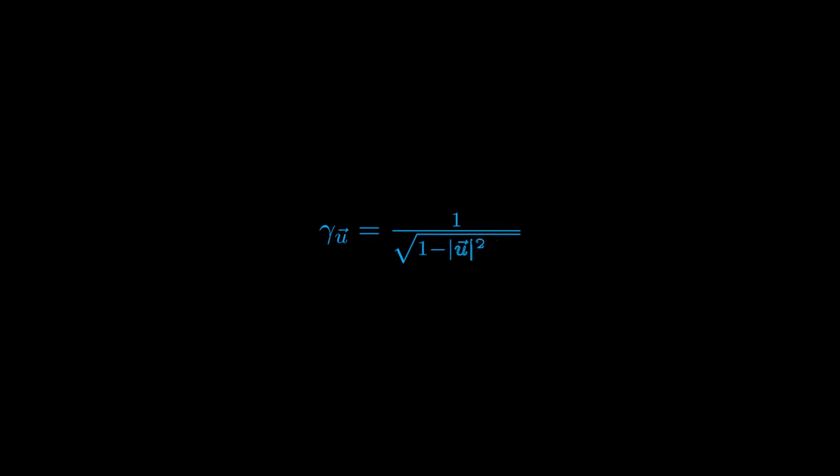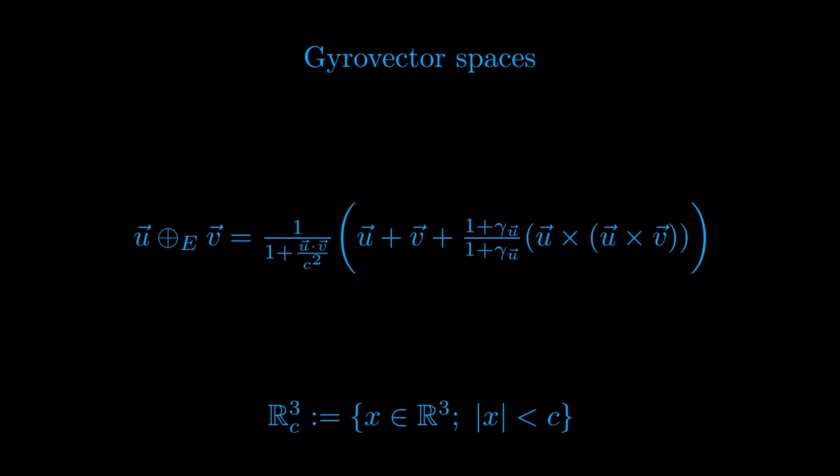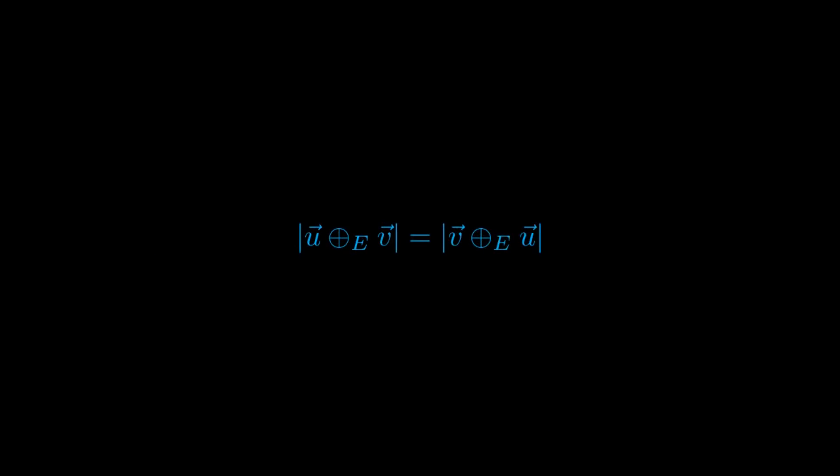Here gamma is the Lorentz factor, which is pretty frequent in special relativity. By the definition of velocity composition at admissible velocities we gave, we see that when we compose a velocity u with a velocity v and a velocity v with u, we see that composing u with v is different than composing v with u, so the composition that we define is generally non-commutative. However, we see that the two have the same magnitude. For this reason, we can then construct a unique rotation operator that we will denote as gyr of u and v, that is able to quote-unquote fix the non-commutativity of our algebraic structure with the following relation.